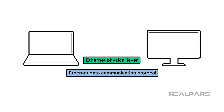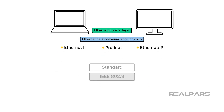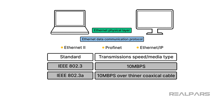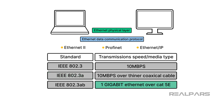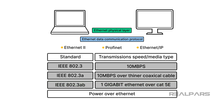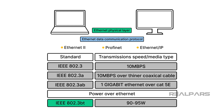An Ethernet physical layer requires an Ethernet data communication protocol. When we refer to Ethernet, it could refer to a number of data communication protocols, including Ethernet 2, PROFINET, EtherNet/IP, and others. All of these protocols fall under the IEEE 802.3 standard. These are distinguished from one another by additional identifiers. For example, Ethernet over coax cabling is identified as IEEE 802.3a. Ethernet over a multi-pair unshielded twisted-pair cable such as CAT5e, operating at 1 gigabit per second, is identified as IEEE 802.3ab. There is also a standard for delivering power over Ethernet, which is IEEE 802.3bt.